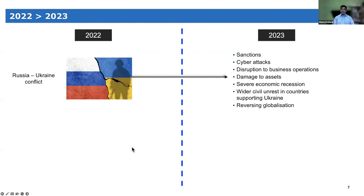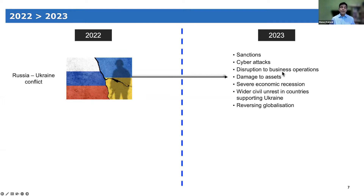Let me start with risks already with us today, which are expected to stay in 2023 and beyond. The big topics around operational risk include the Russia-Ukraine conflict — we're all aware of the sanctions, the cyber attacks, the disruption to business operations particularly for Ukrainian and Russian banks, and damage to assets. These first four risks depend on how the conflict evolves: if it expands, risk exposures expand; if it ends, those exposures may come down over 2023 and beyond.